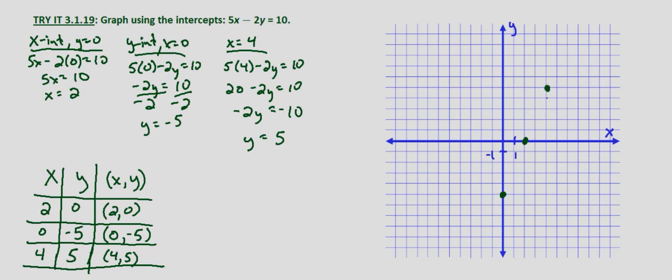And it does appear that all three line up. So we draw a line through all three points. And this is the resulting graph of 5x minus 2y equals 10.